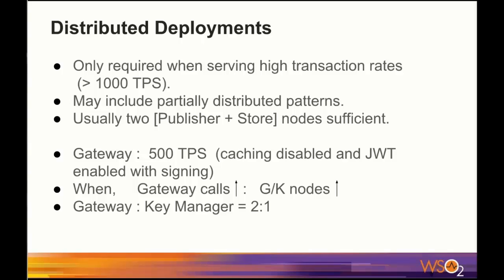The gateway can handle up to 500 TPS if caching is disabled and JWT is enabled with signing. When the number of gateway calls is exceeded, we have to increase gateway and key manager nodes. A 2 to 1 gateway to key manager nodes ratio is sufficient in normal scenarios.